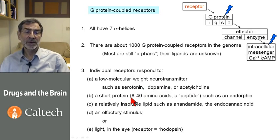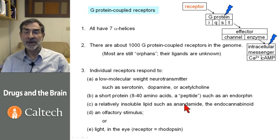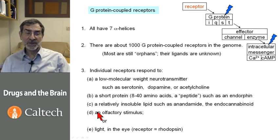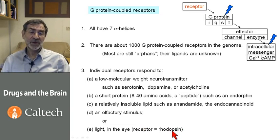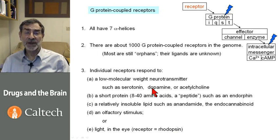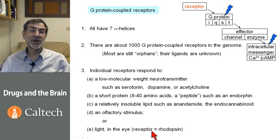Others respond to a short protein of 8 to 40 amino acids — a peptide — such as endorphin. Others respond to relatively water-insoluble lipids, such as anandamide, the endocannabinoid. Most G-protein coupled receptors are actually olfactory receptors, responding to olfactory stimuli. In the eye, there are four genes for rhodopsin, each with retinal — a small molecule — bound in a position that looks much like a low molecular weight neurotransmitter. Light photoisomerizes the retinal, producing a change in the receptor structure, and the receptor goes on to activate a G-protein.